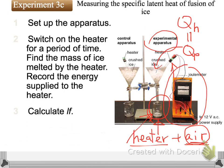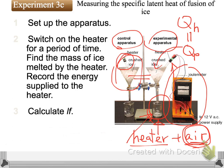To eliminate the error caused by ice melted by air, we have to use the control apparatus — remember the control set. You can see an equal amount of ice inside the funnel with a heater placed in it, but with one difference: the heater is not connected to the power supply. So mainly the control set helps us find out the mass of ice melted into water by air only.